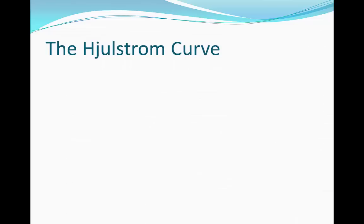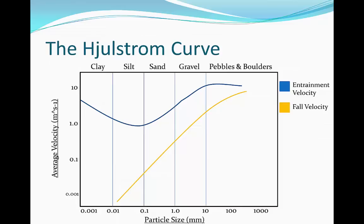So now we're going to look at how to draw the Hjulström curve. As you can see on screen, it's basically a box-set structure that has a pair of axes and it also displays the type of particles that are going to be located inside the river. On the x-axis we have the particle size in millimetres and on the y-axis the average velocity. Please pause the video and copy down this graph so that we can be ready to start explaining it.